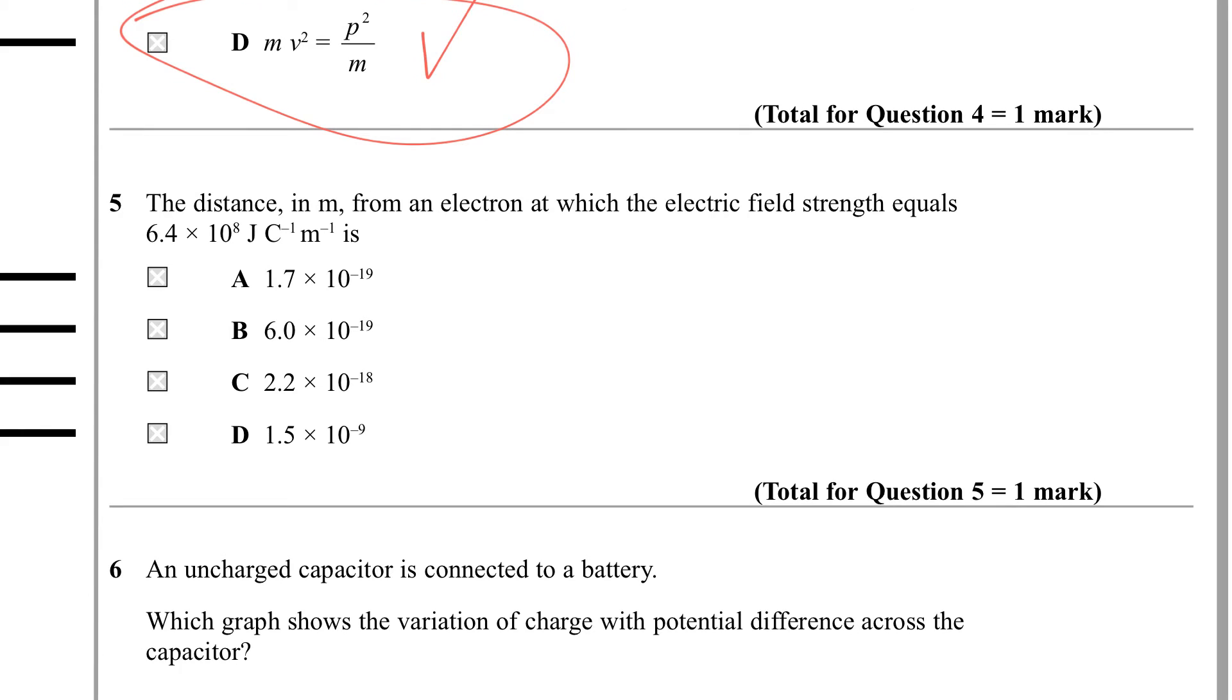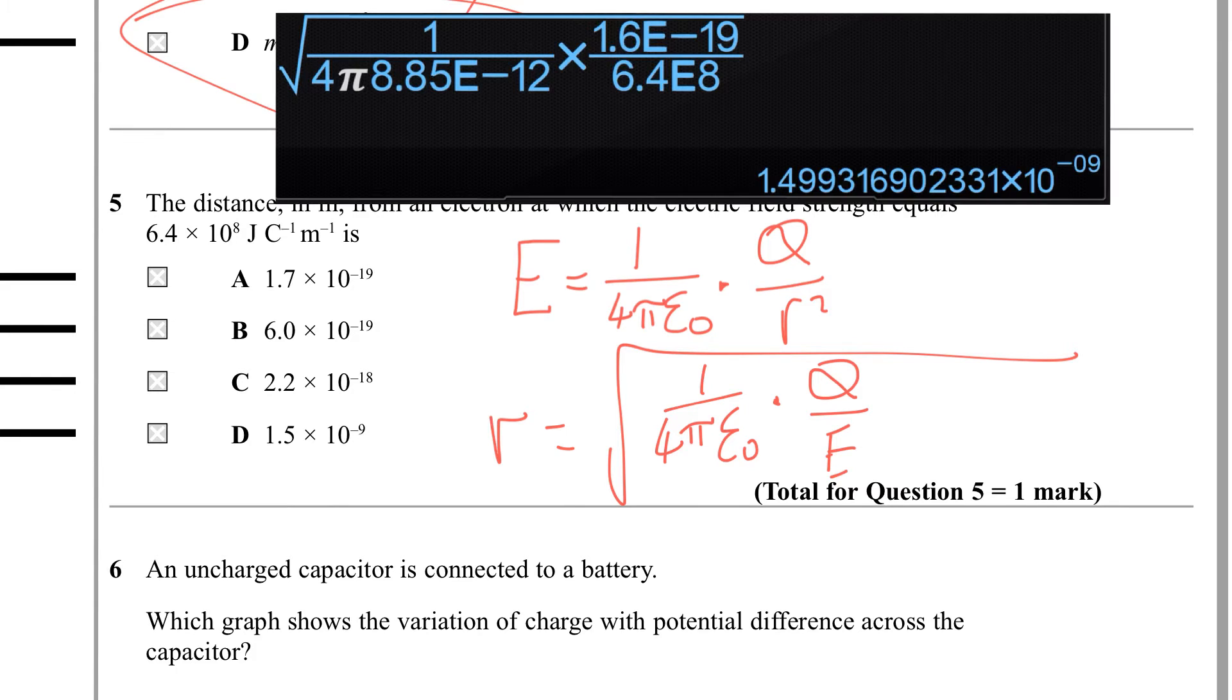Question 5. The distance in meters from an electron at which the electric field strength equals this value is one of these. So this is straightforward - calculate the electric field strength and relate it to the r value. We need an expression for electric field strength: that's 1 over 4 pi epsilon naught q over r squared. That means r is going to equal the square root of 1 over 4 pi epsilon naught q over E. Filling that in, I'm getting this value of 1.5 times 10 to the minus 9, which means it's D.